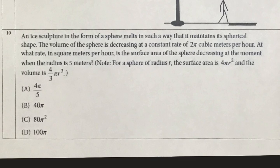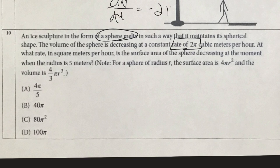Okay, number 10. We have an ice sculpture in the shape of a sphere, so the volume is decreasing at a rate of 2π, so dV/dt is 2π cubic meters per hour. At what rate is the surface area of the sphere decreasing at the moment the radius is 5? Okay, so we have two separate problems here.